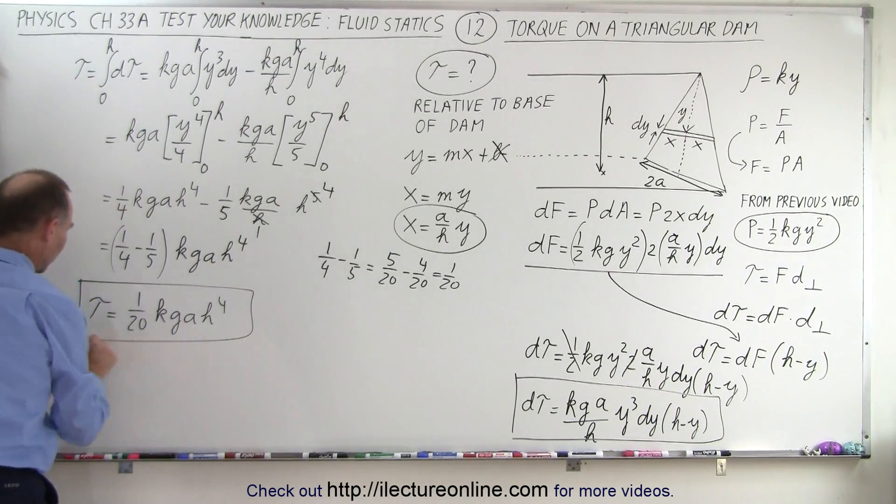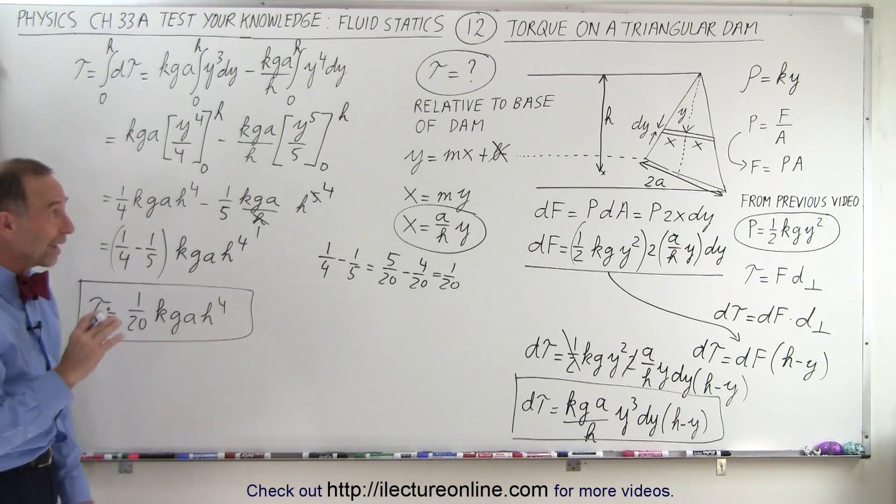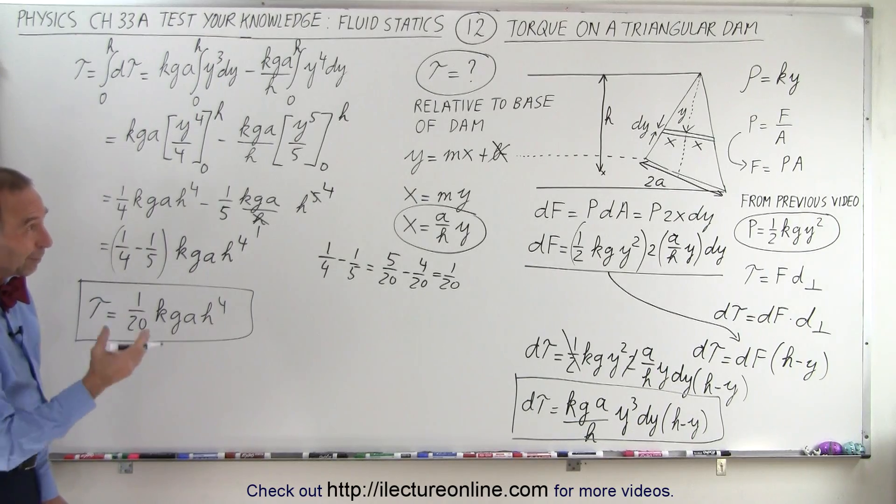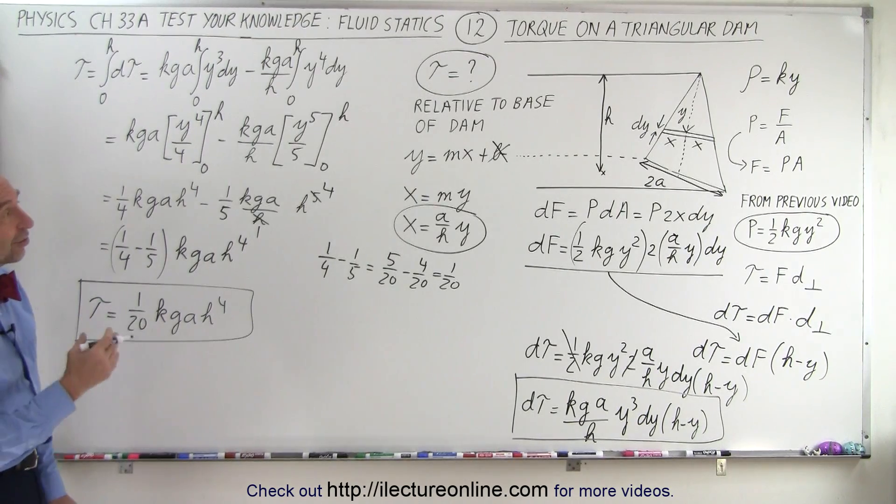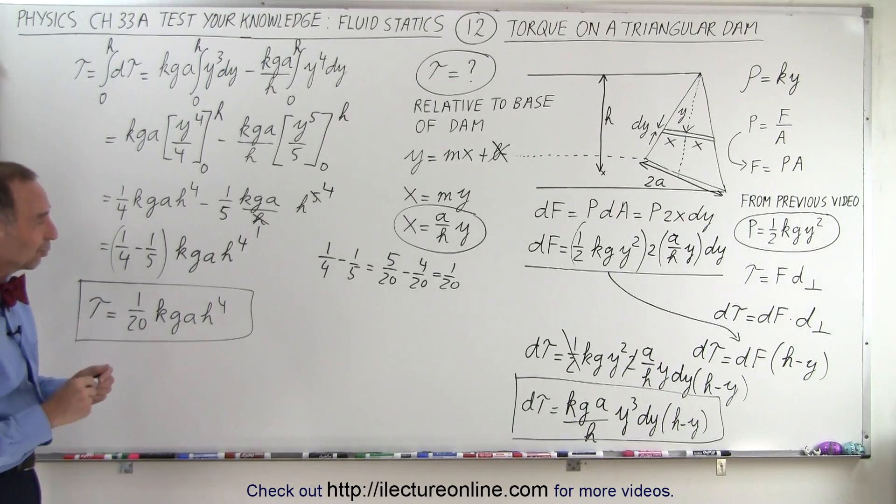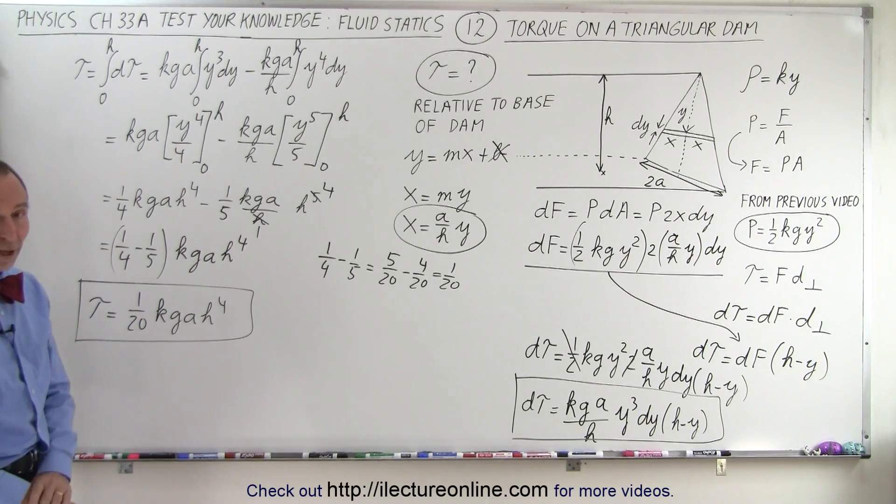And that's how we find the total torque on that triangular dam when we have a liquid behind the dam which is not of constant density but density K times y. And that is how that's done.